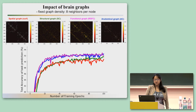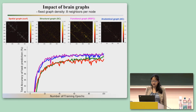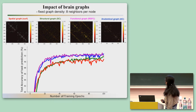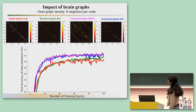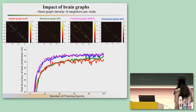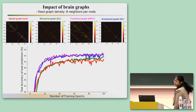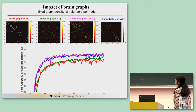We also explored the impact of choosing different graphs. We tested four graphs: spatial information, structural covariance, functional connectivity, and diffusion tractography. The functional graph and anatomical graph showed very similar performance during training, and both performed much better than the other two graph types.